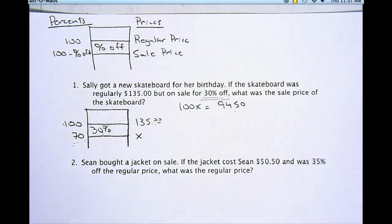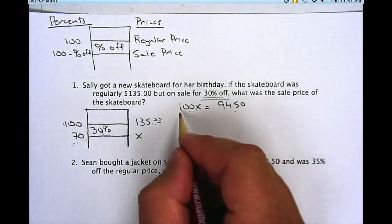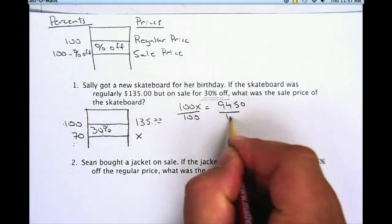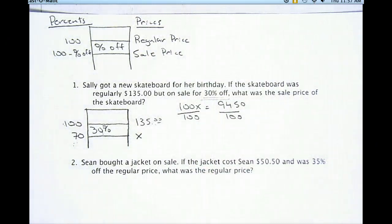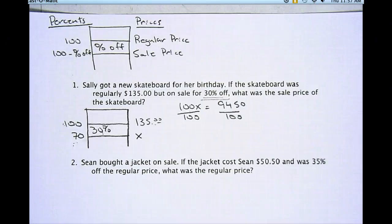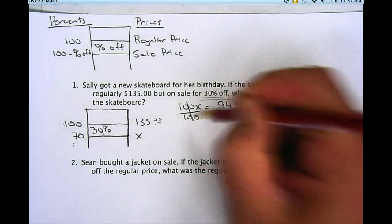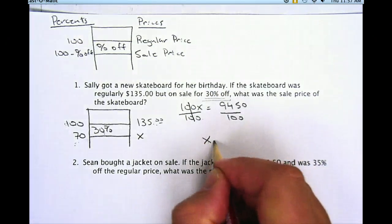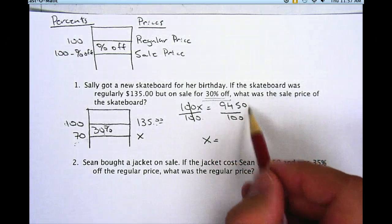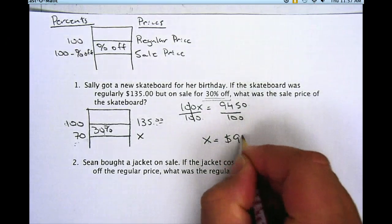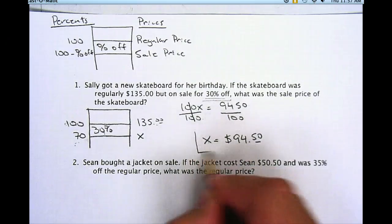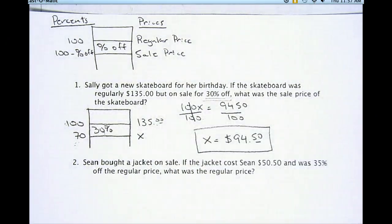To solve for X, I undo multiplying X by 100 — the opposite of multiplying by 100 is dividing by 100. I write the division bar. So 100X divided by 100 leaves just X, and 9,450 divided by 100 gives $94.50. So the sale price of that skateboard would be $94.50.